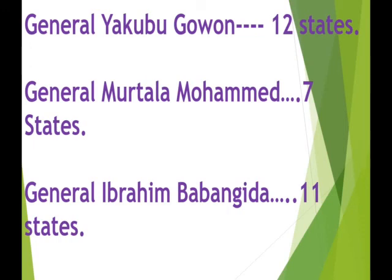Hello kids, let's summarize all we've been saying. The three leaders of state creation we discussed today are: General Yakubu Gowon, who created 12 states; General Murtala Mohammed, who created seven states; and General Ibrahim Babangida, who created 11 states. I know you've learned something today about state creation — the leaders that created the states and the years they were created. With this, we come to the end of class today. Have a lovely time, and do your quiz assignment. Bye for now!